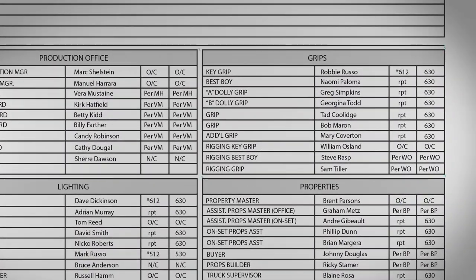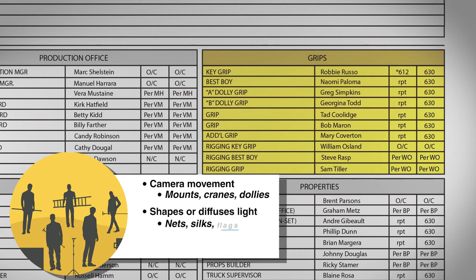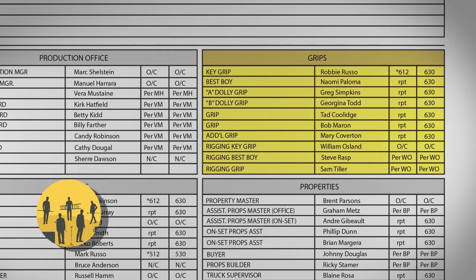The grip department is responsible for setting up and operating all equipment that holds or moves the camera, such as mounts, cranes, and dollies, and equipment that shapes or diffuses light such as nets, silks, and flags. They work with non-electrical components on set. The grip department works in tandem with the camera and lighting department.